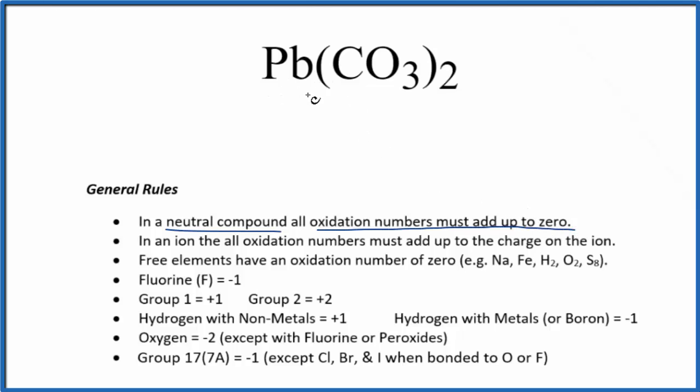The next thing we notice is we have lead. This is a transition metal, so we can't figure the oxidation state just by looking at the Pb. We need to look at what it's bonded to. So here it's bonded to the carbonate ion. In fact, we have two carbonate ions.